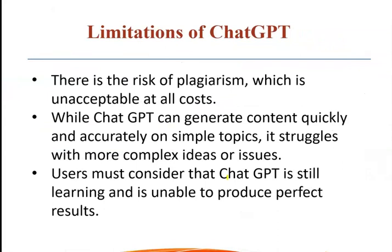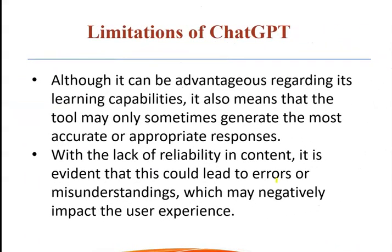There are advantages but also disadvantages. There are limitations and risks in ChatGPT content, including plagiarism, which is unacceptable. When ChatGPT generates content quickly and accurately on simple topics, it can struggle with complex ideas and issues. Users must consider that ChatGPT is a learning and ongoing process, and modification is still necessary. The tools often have accurate results, but sometimes the flip side is risky. It doesn't provide credible information, which can lead to misunderstanding, errors, and a negative user experience.